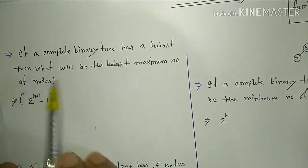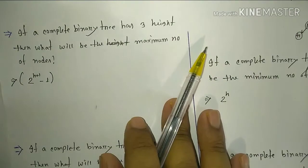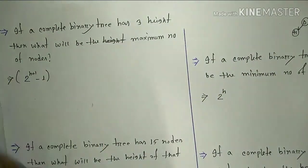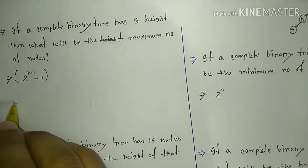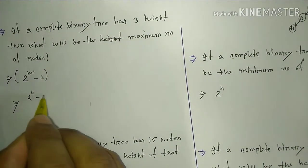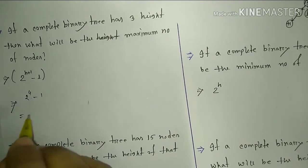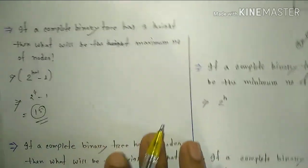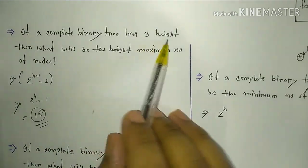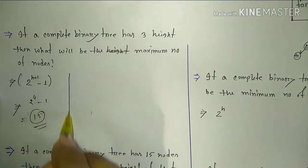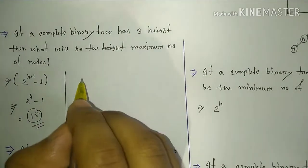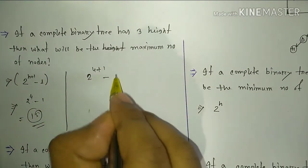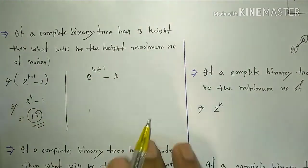For height 3, the maximum number of nodes: using the formula 2 to the power (h+1) minus 1. So for height 4, that gives us 4 plus 1 minus 1, resulting in 15 nodes.